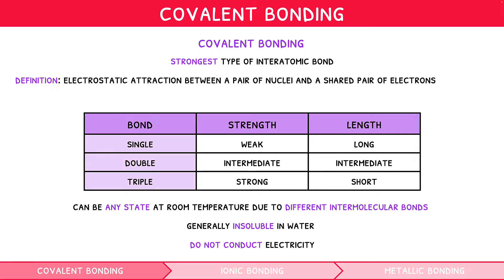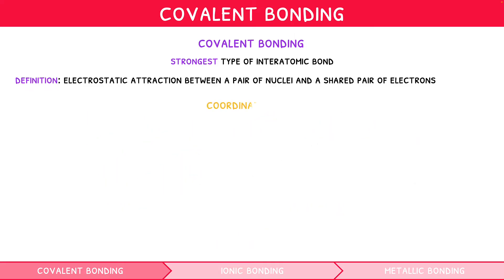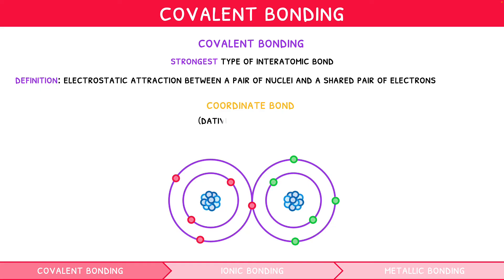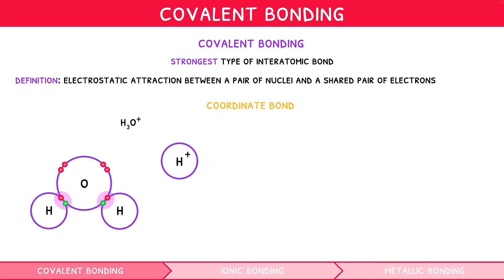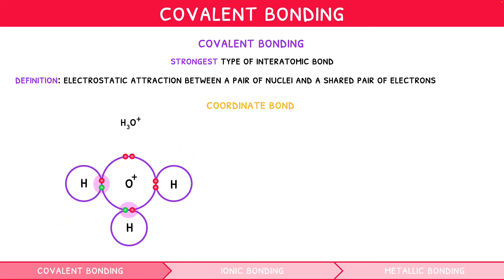Whilst the pair of electrons contained within a covalent bond generally come one from each atom, this is not always the case. In a coordinate bond, also called a dative covalent bond, a single atom donates both electrons. Once this bond forms, it is identical to a regular covalent bond — the only difference is the origin of the electron pair. In H3O+, the oxygen donates a pair of electrons to one of the outer hydrogen atoms, forming a dative bond, while the other outer hydrogen atoms bond via a regular covalent bond.